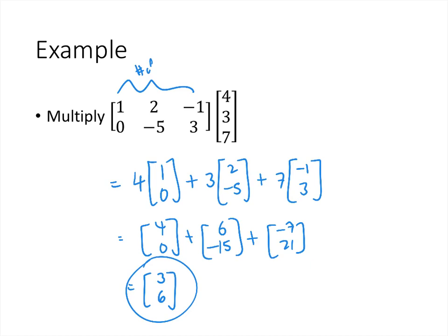Notice that the number of columns of the matrix has to equal the number of entries in the vector. If those two numbers aren't the same, the notation doesn't make any sense. If you try to multiply a matrix by a vector and the number of columns doesn't match the number of entries in the vector, it's simply undefined.